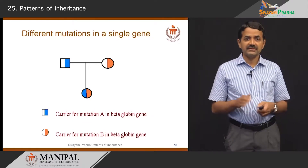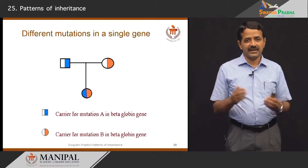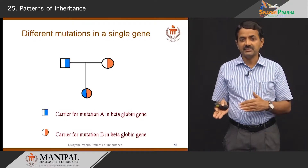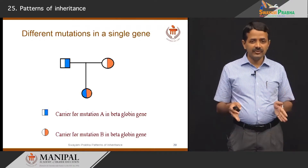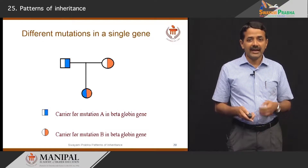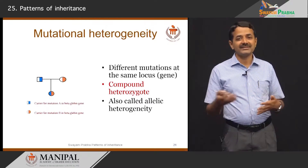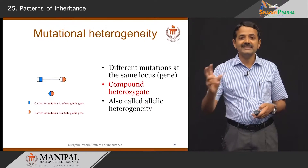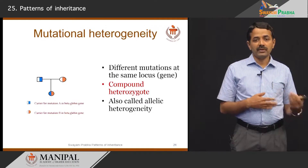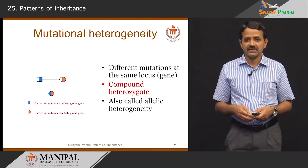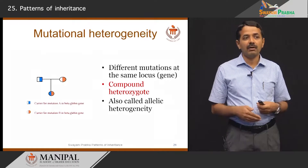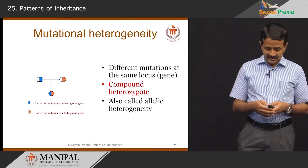The mutations can also be different within a single gene. For example, one parent has one mutation in the beta-globin gene and the other parent has a different mutation in the same gene; the child has two mutations at the same locus and will be affected with beta-thalassemia major or intermedia. This situation is called compound heterozygosity, also called mutational heterogeneity or allelic heterogeneity. In Western countries where consanguinity is rare, autosomal recessive diseases often manifest in the compound heterozygous state, whereas in India and Gulf countries where consanguinity is more common, homozygous mutations are more frequent.